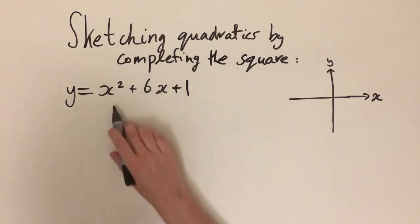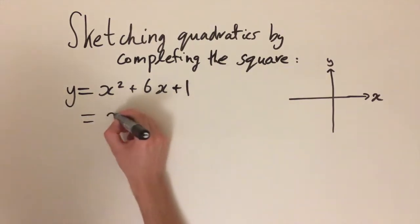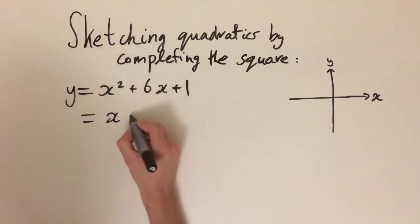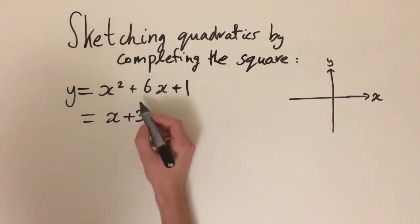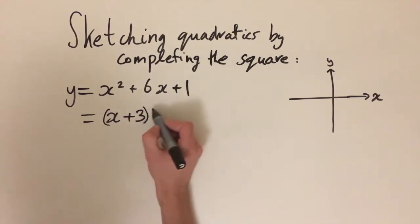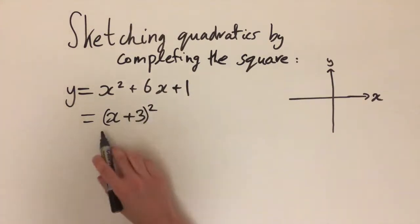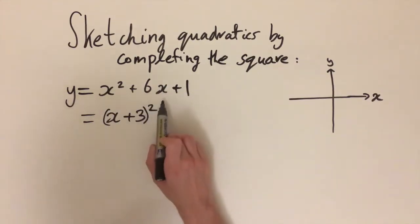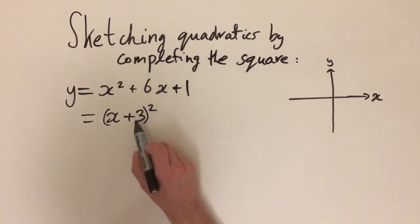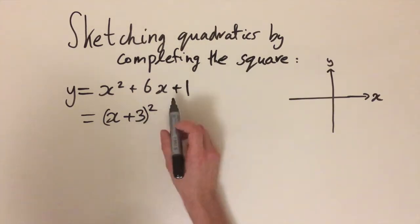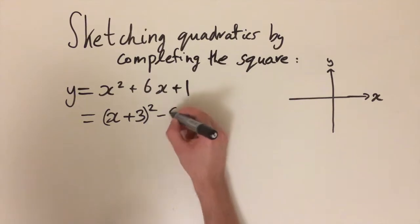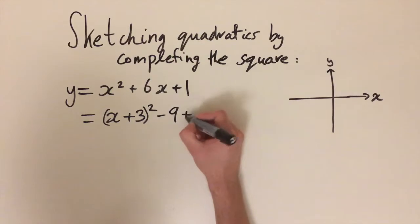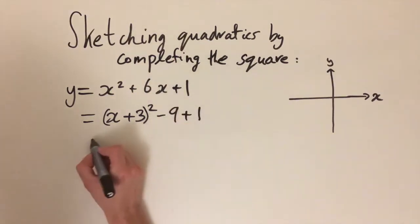First off we are going to complete the square. The way we do this is we write the x down, then we look at the coefficient in front of the x which is 6, divide it by 2 and write plus that answer — so x plus 3 — and then we square this. If we expand this out we get x² + 6x, but we'd also get an extra constant: 3 times 3 which is 9, and we don't have that originally, so we need to subtract off this extra constant and drag down the plus 1 from before.